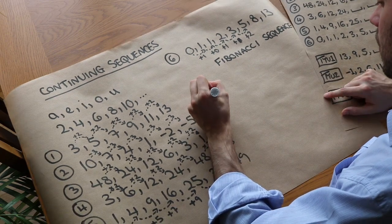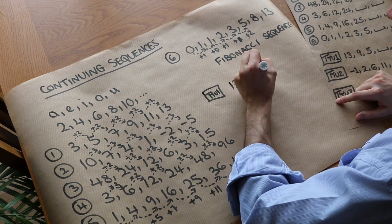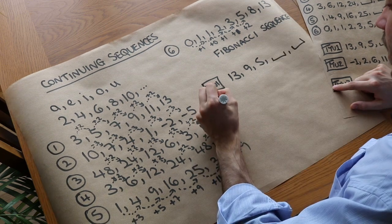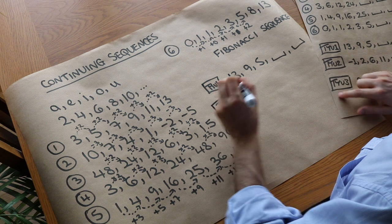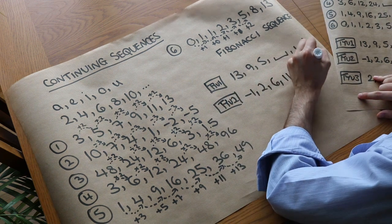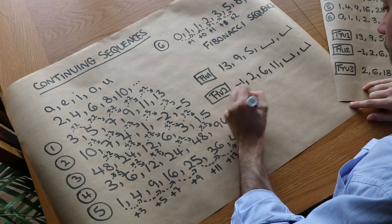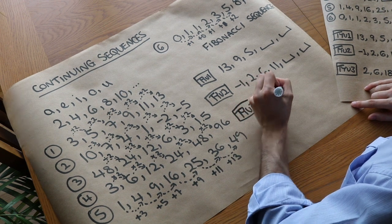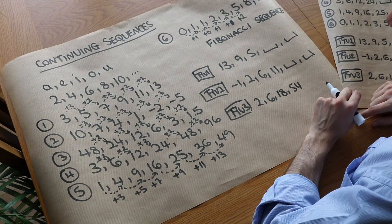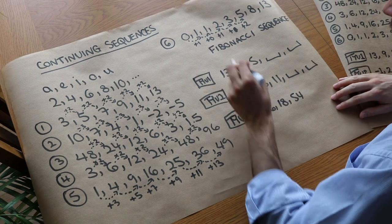Now some test-your-understanding questions. First: 13, 9, 5 — find the next two terms. Second: minus 1, 2, 6, 11 — continue that sequence. Third: 2, 6, 18, 54 — work out the next two terms. You may want to pause the video to have a go at these.